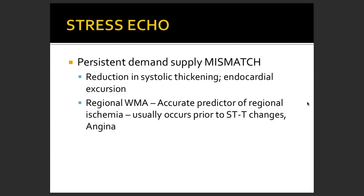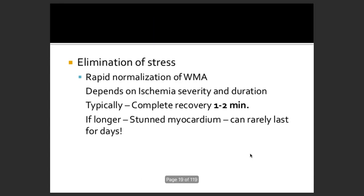Stress echo has a role to show the mismatch between supply and demand, showing reduction in systolic thickening, endocardial excursion, or regional wall motion abnormality — an accurate predictor of regional ischemia, which usually occurs prior to ST-T changes. Elimination of stress is also important: rapid normalization of wall motion abnormality depends on the ischemia's severity and duration, typically recovering in one to two minutes.